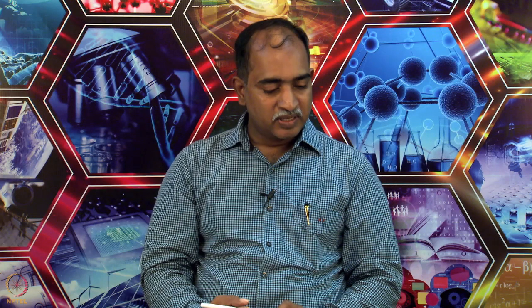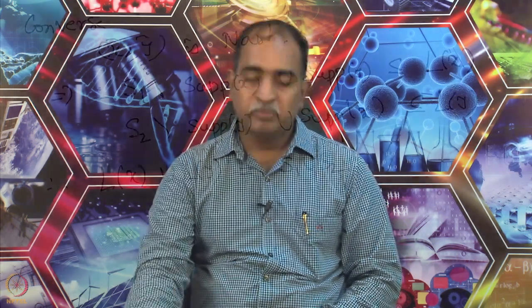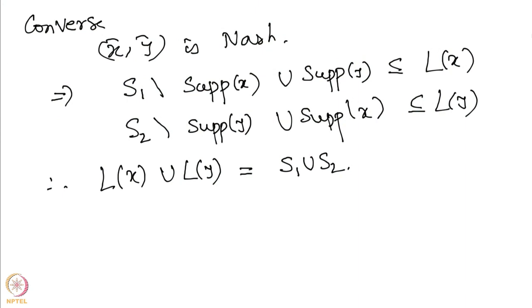The essence of this theorem is that the extreme points of the polytope P1 × P2 which are different from the origin are exactly the Nash equilibria. This is exactly what one uses in providing an algorithm for computing Nash equilibrium. Now we come to the Lemke-Howson algorithm.